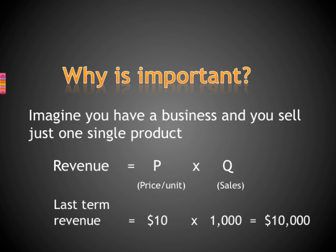Let's imagine that you have a small business where you sell one single product. The total revenue of your business is calculated as price times quantity. If you had sold last term 1,000 units at $10 each, your total revenue must have been $10 times 1,000 units — $10,000.